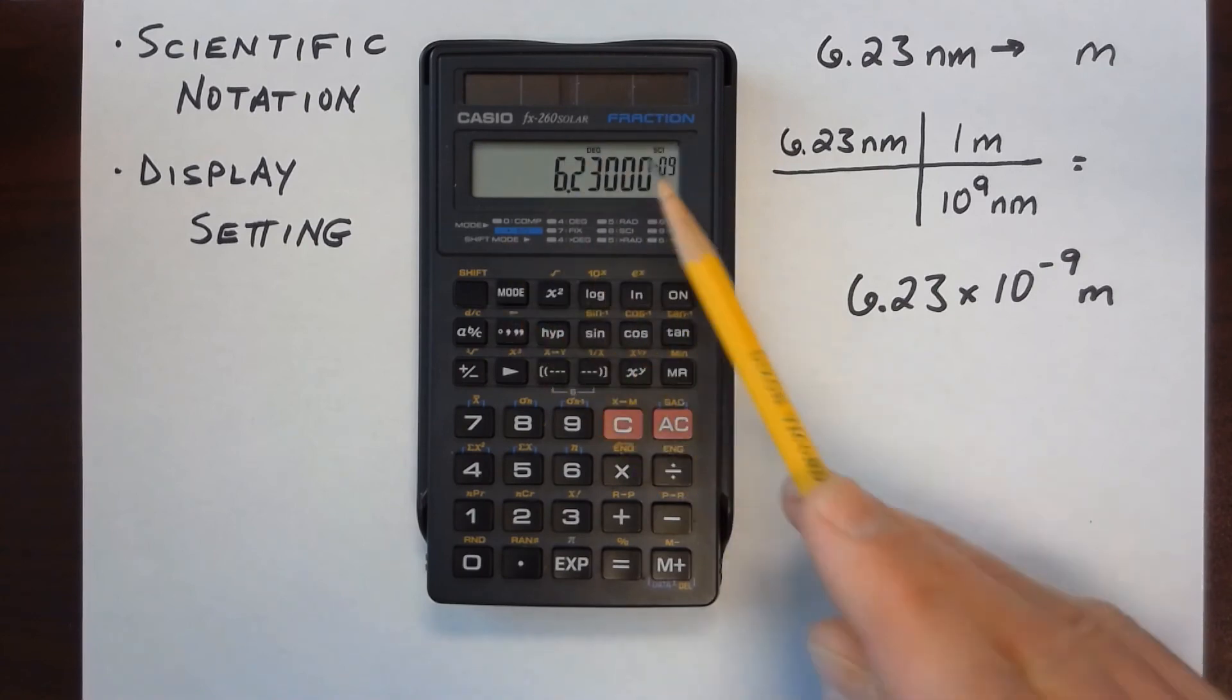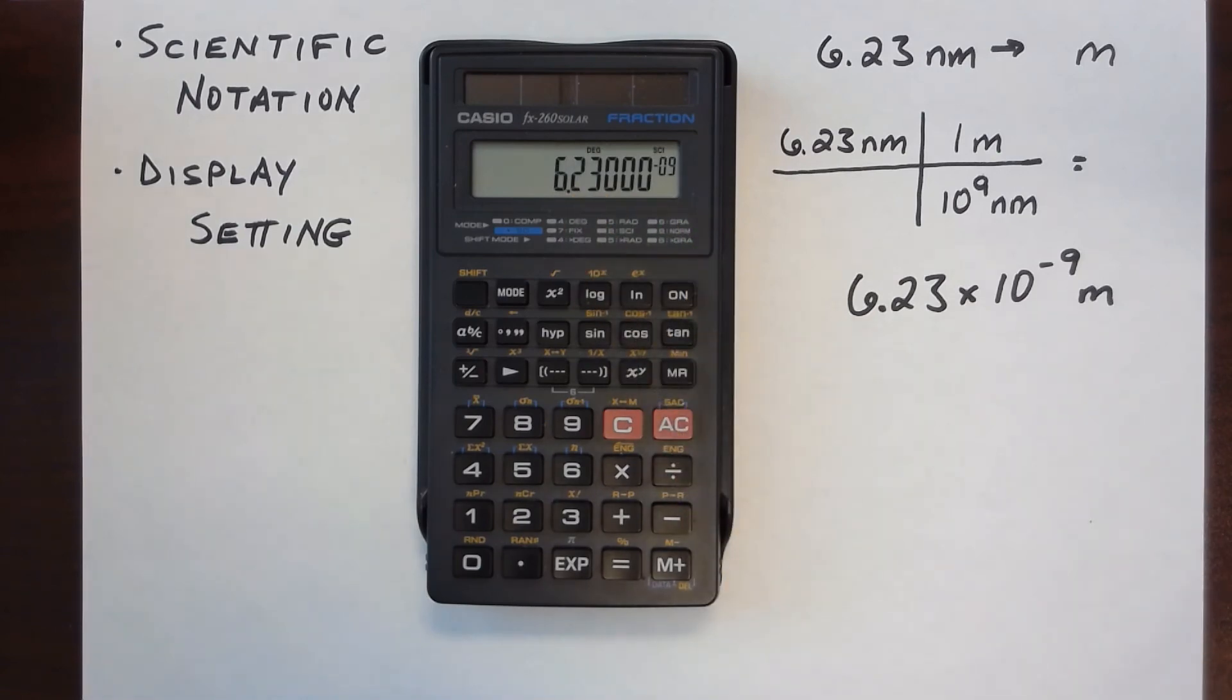Now the only significant ones are the 6, the 2, and the 3, but I get the number displayed to 6 digits.